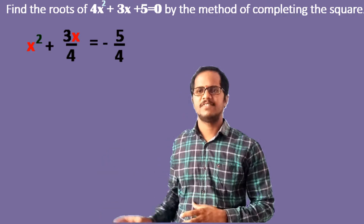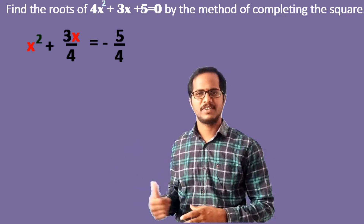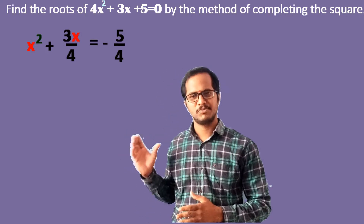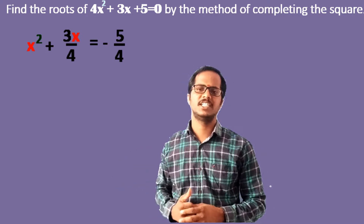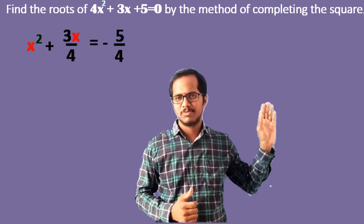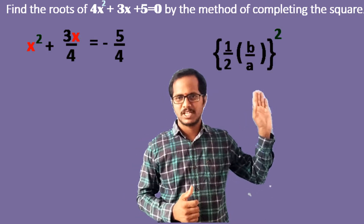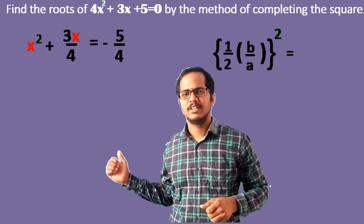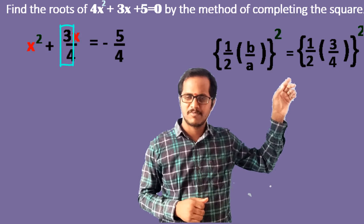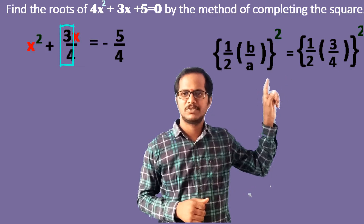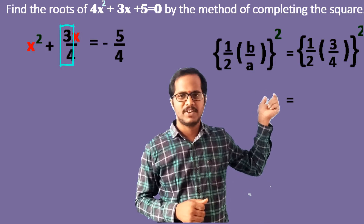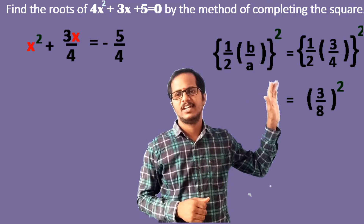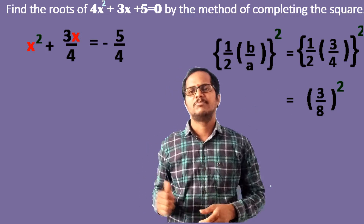Next, we have to make the left-hand side a perfect square. To do that, we add (1/2 × b/a)² on both sides of the equation. Let us find this term: (1/2)(b/a)² = (1/2 × 3/4)² = (3/8)². So (3/8)² is the term we need to add on both sides.